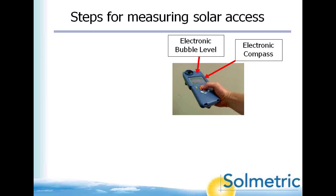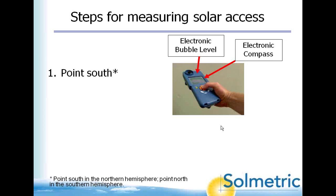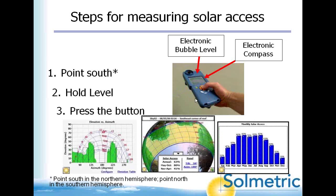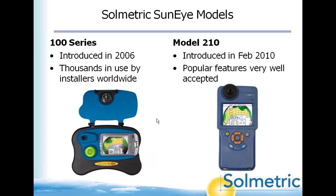The most important thing when operating the SunEye is to point it south, hold it level, and push the button — then you can view results in various ways. The SunEye comes in two models: the 100 series, introduced in 2006 and now being phased out, and the new model 210 with integrated level, compass, and GPS.